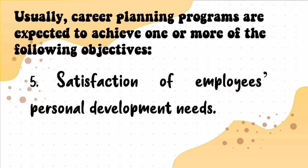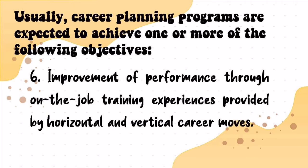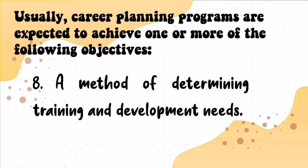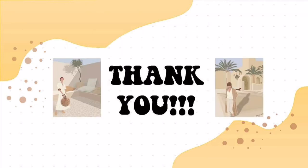Fifth, satisfaction of employees' personal development needs — personal growth of the employee is important; they should benefit beyond just their basic rights. Sixth, improvement of performance through on-the-job training provided by horizontal and vertical career moves. Seventh, increased employee loyalty and motivation leading to decreased turnover — when employees benefit from career training programs, they are inspired to give back and provide their best performance. It can prevent excessive movement between departments because the employee is genuinely benefiting where they are placed. And lastly, a method of determining training and development needs.